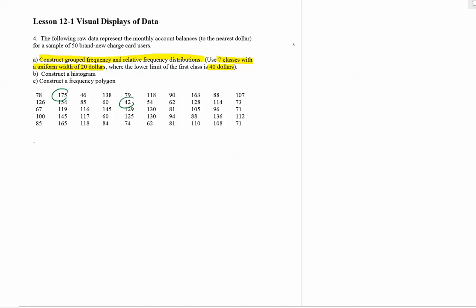Let's go ahead and begin our first class with the forty dollars, and they want us to have a uniform width of twenty dollars. So I'm going to begin with the first class with forty dollars, and since they give us a uniform width of twenty dollars, the width is actually going down. So I want to add twenty vertically to the first number. So forty plus twenty is sixty.